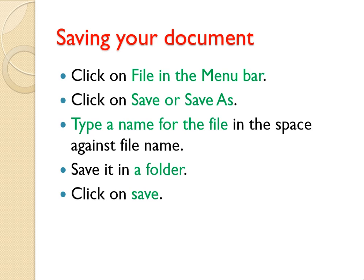After you click on the Save or Save As option, one dialog box will appear. In that dialog box, type a name for the file in the space against the file name. Then you can choose the location where you want to save. Select the folder, then save it in that particular folder. At last, click on the Save button.